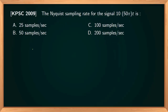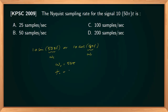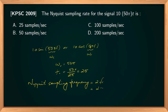In this question, there is an error. The signal will be 10 sin(50πt) or 10 cos(50πt). In both cases, the angular carrier frequency ωc = 50π. Therefore, the frequency of the signal Fc = ωc / 2π = 25 Hz. By the Nyquist sampling theorem, the Nyquist sampling frequency is twice the signal frequency: 2 × Fc = 2 × 25 = 50 samples per second.